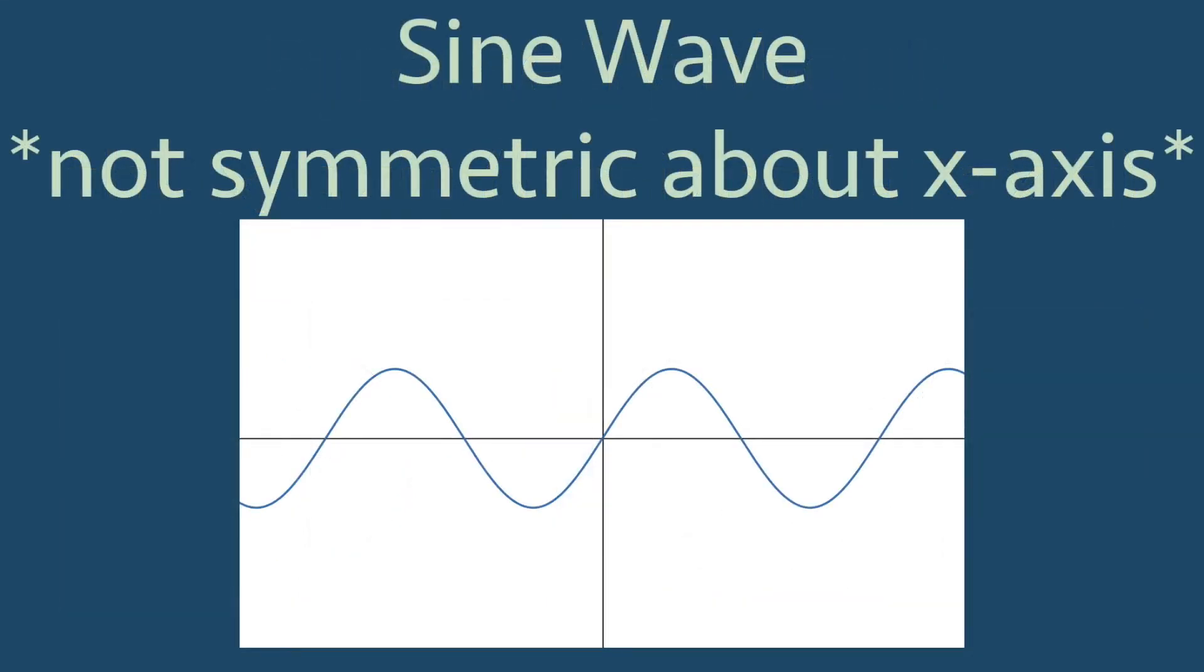In the realm of music, sounds are made up of sine waves, which have the following graph. Just looking at the graph of the sine wave, we can see that it is not symmetric about the horizontal axis. If we flip it over the horizontal axis, it is not the same graph.